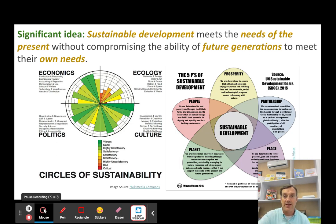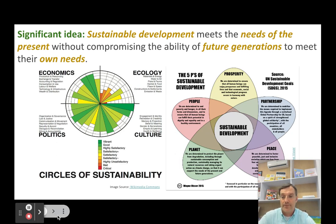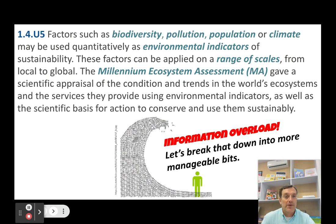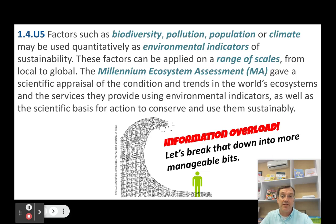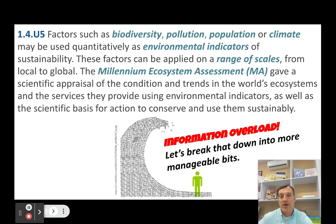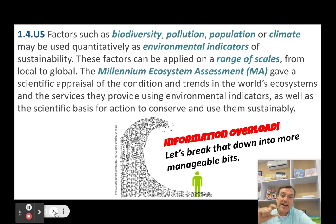This is where natural capital and natural income come into play. Your first understanding statement from the syllabus is this big long thing here. Factors such as biodiversity, pollution, population, or climate can be used quantitatively as environmental indicators of sustainability. It's way too much information to remember as written, so let's break it down into smaller bits and look at it piece by piece.